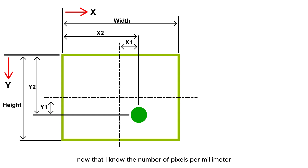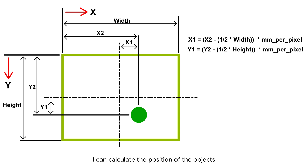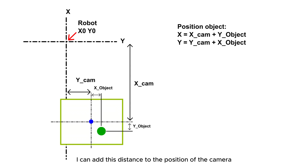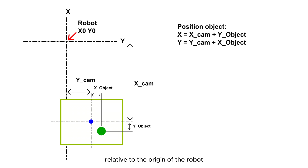Once I have this ratio, I can calculate the millimeters per pixel for a certain height. Now that I know the number of pixels per millimeter, I can calculate the position of the objects relative to the center of the camera. Finally, I can add this distance to the position of the camera, giving me the positions of the objects relative to the origin of the robot.